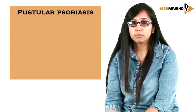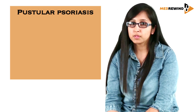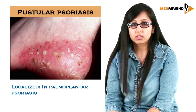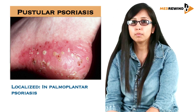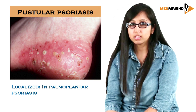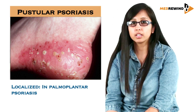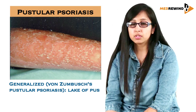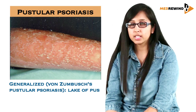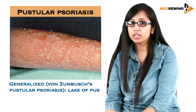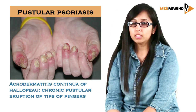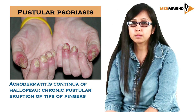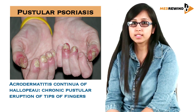In pustular psoriasis, there are four forms. First is the localized pustular variant, in which the lesions on palms and soles are well-defined erythematous lesions with pustules on them. Second is the generalized variant, known as the von Zumbusch type, in which there is a lake of pus on an underlying erythematous base.